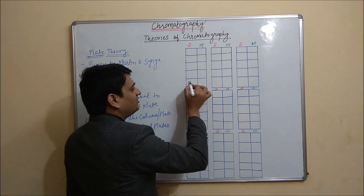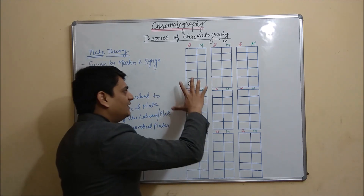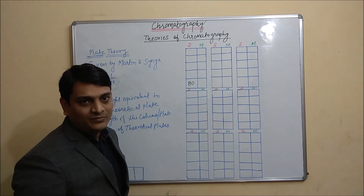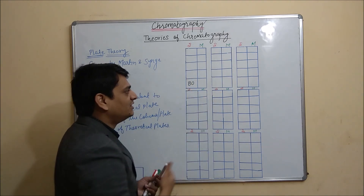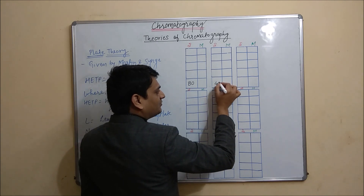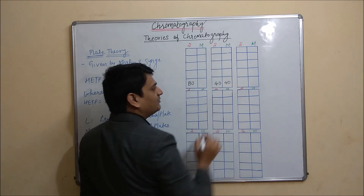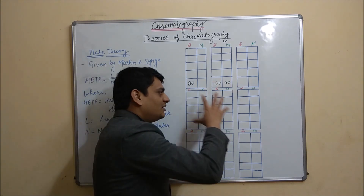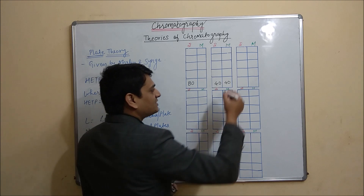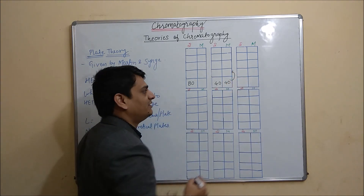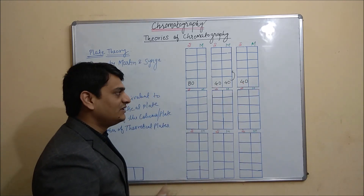If we are taking 80 mg of solute or analyte in stationary phase, then as mobile phase is continuously running, half of this solute will go to the mobile phase from stationary phase. So 40 mg will remain in stationary phase and 40 mg will go to the mobile phase. As the mobile phase is a continuous running phase, these 40 mg will move further to the next plate.